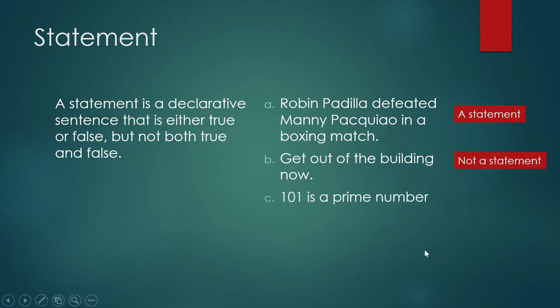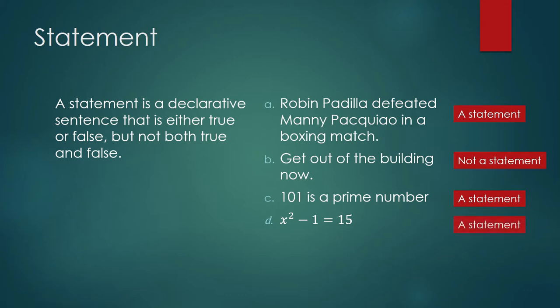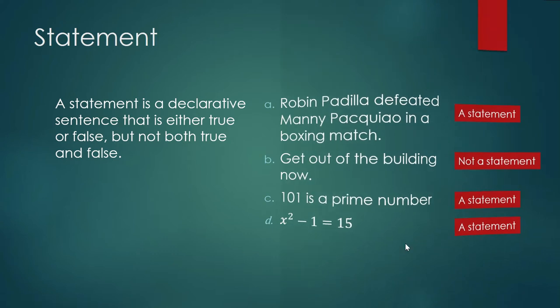'101 is a prime number' — that is a statement. 'x squared minus 1 is equal to 15' — this is also a statement. In particular, you call this an open statement; it's going to be true or false depending on the value of x.